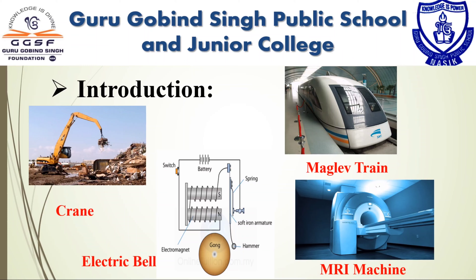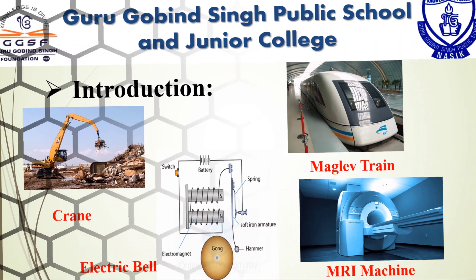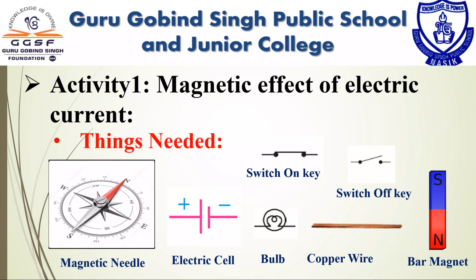Electric current, as we know, is the flow of electric charges. When current flows in a wire, the electrons, which are negatively charged particles, are in motion. Electric current has many interesting effects such as heating effect, chemical effect, and magnetic effect. Let's start with the magnetic effect.